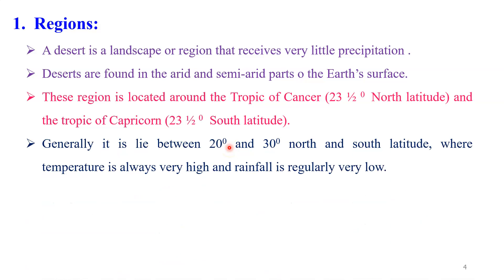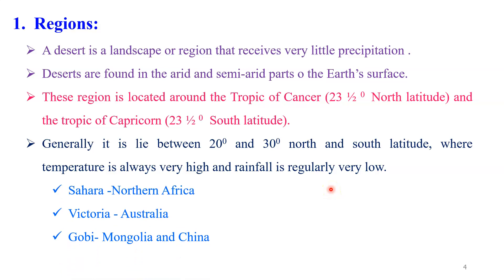If you see their extension, you observe that generally this region lies between 20 degrees North and 20 degrees South. Between this region, you will observe that the hot desert area is located. Here, temperature is always very high and rainfall is regularly very low. If you see the area on the Earth's surface, the Sahara Desert is very important — a very large area is covered by this Sahara Desert.